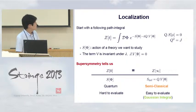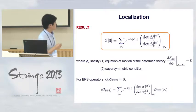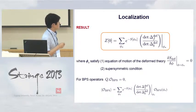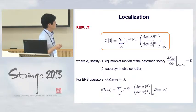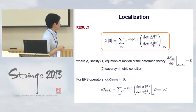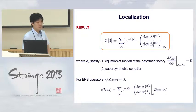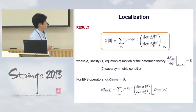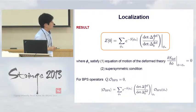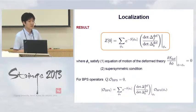As a consequence, the partition function of the original theory can be written as a simple expression, where φ* are the supersymmetric saddle-point configurations satisfying the equations of motion of the deformed theory. We have classical action contributions and one-loop determinant contributions around each saddle point. This is an exact result.